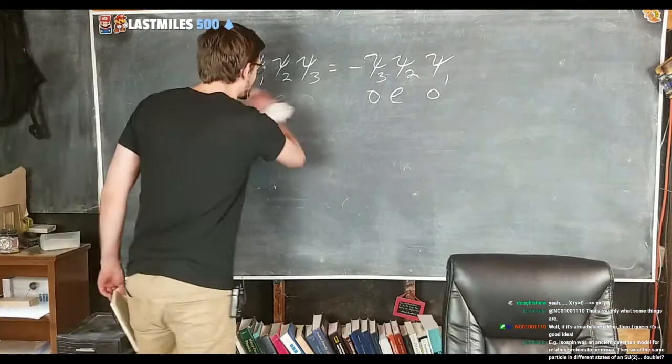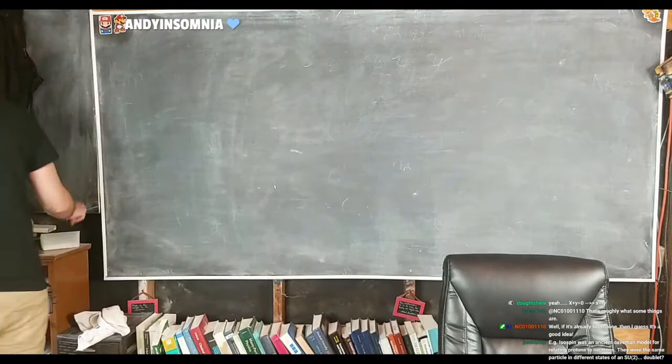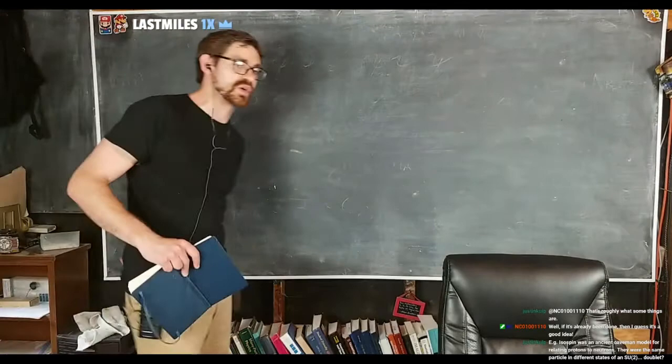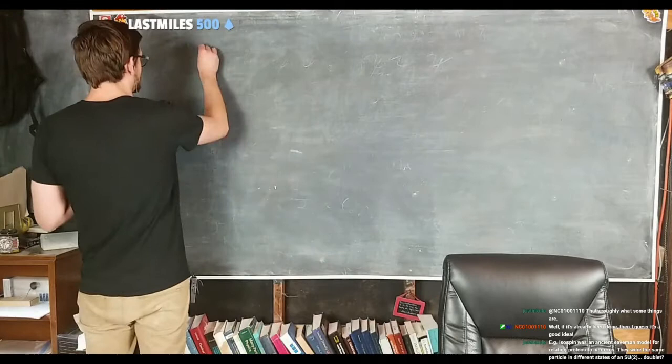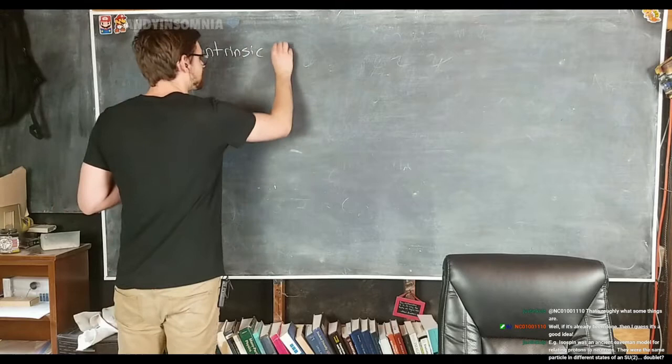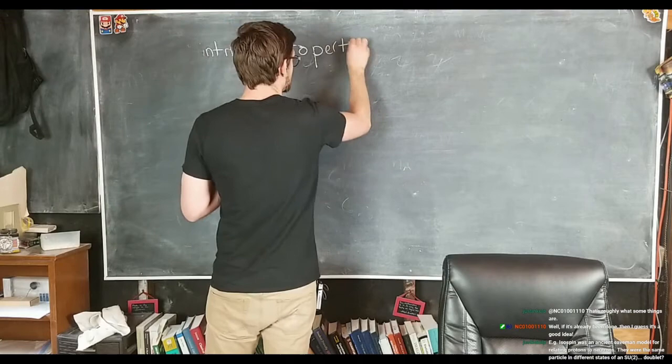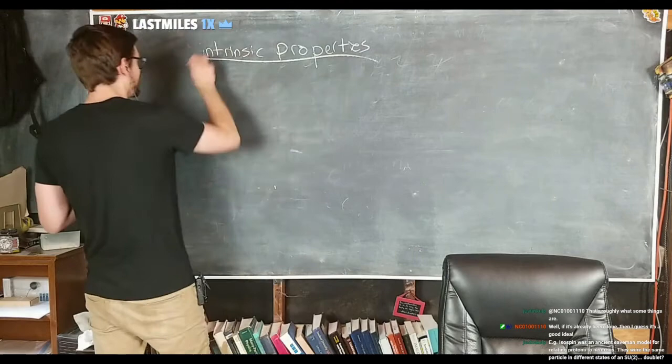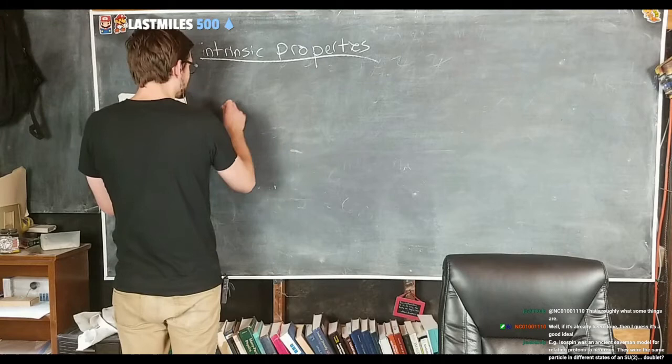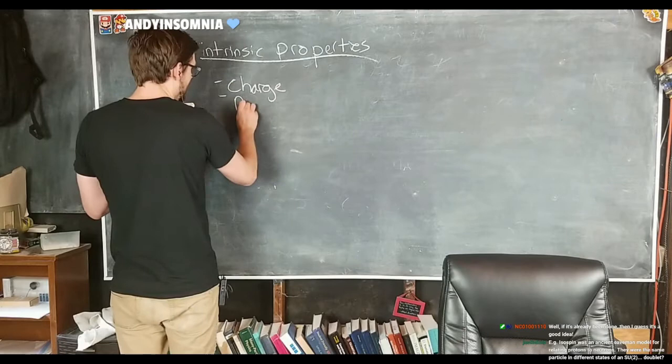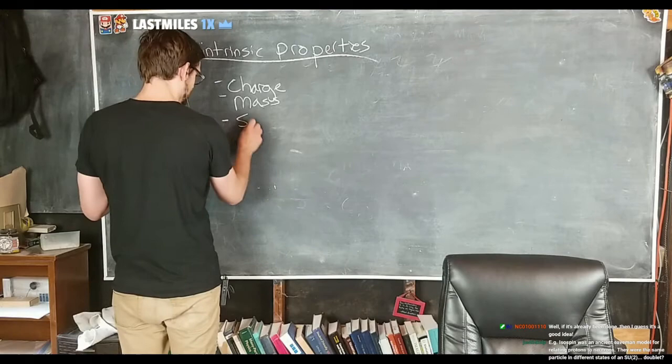So we can talk about a couple of things, a couple of intrinsic things that particles have, right? Particles have intrinsic - and this is just going to be stuff that we're going to talk about. Once you go to a quantum mechanics course, you're going to learn a lot more. But each particle, we can talk about having a few intrinsic things. So we'll say intrinsic properties. What are some intrinsic properties? Particles have charge. Particles have mass. Particles have spin.